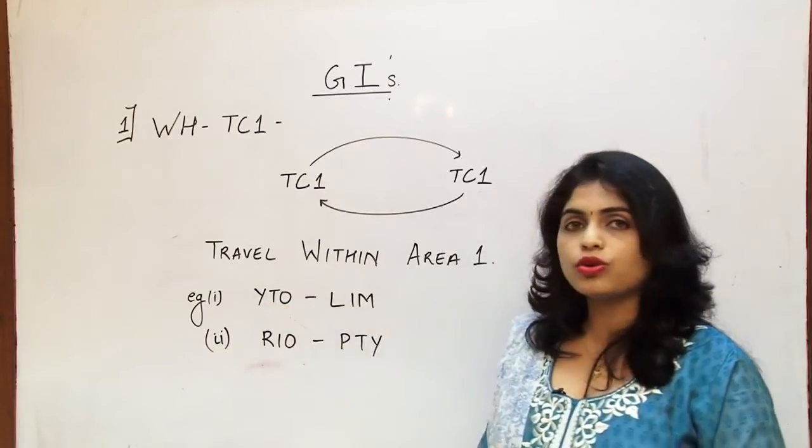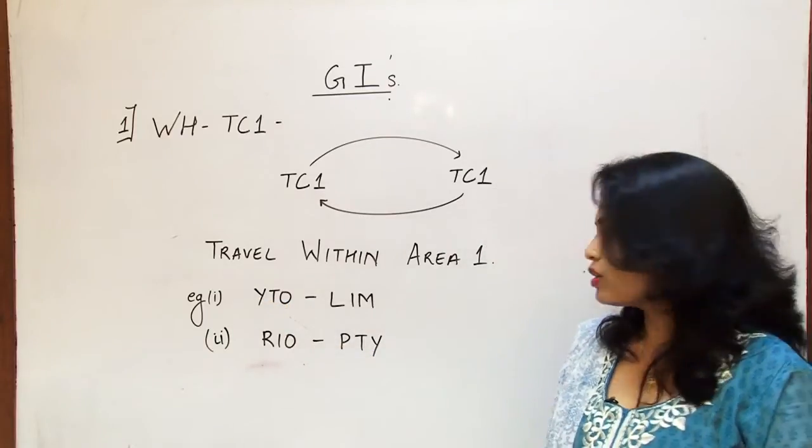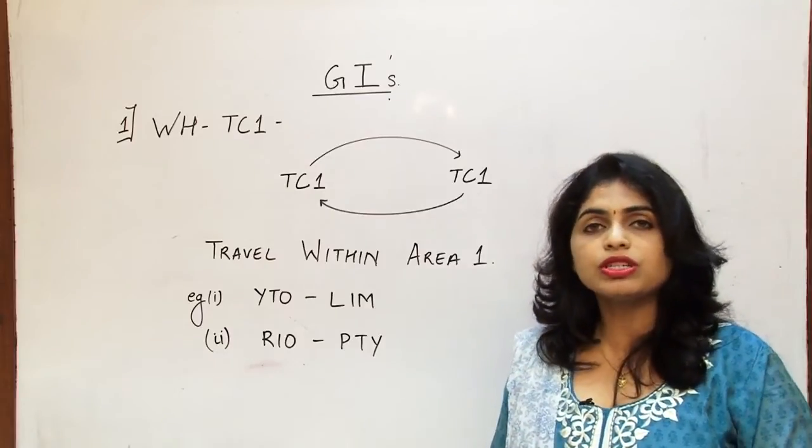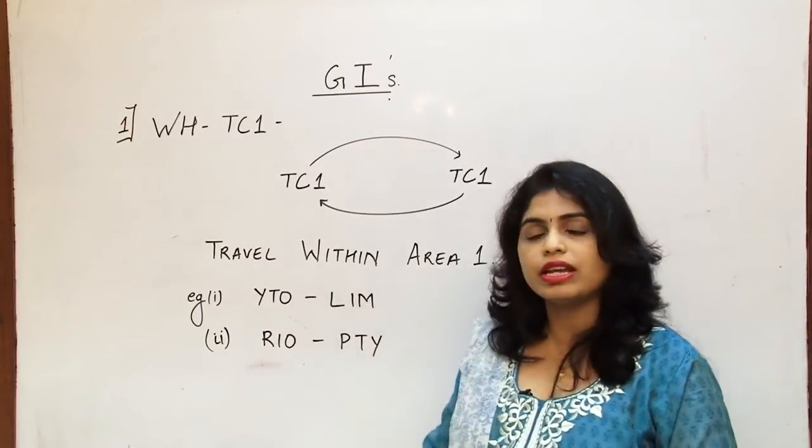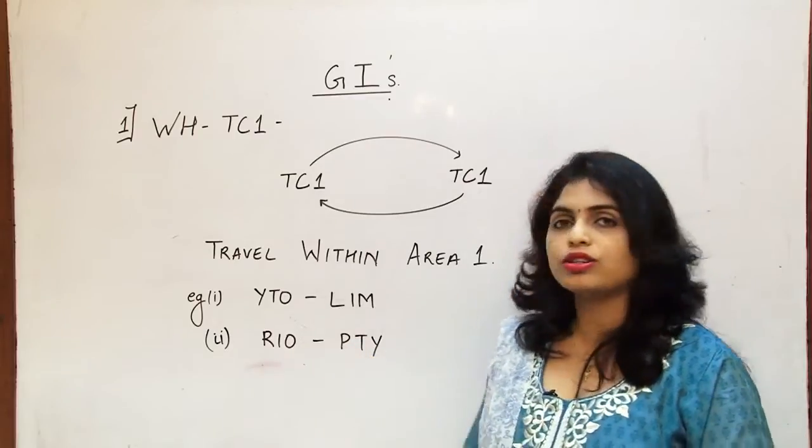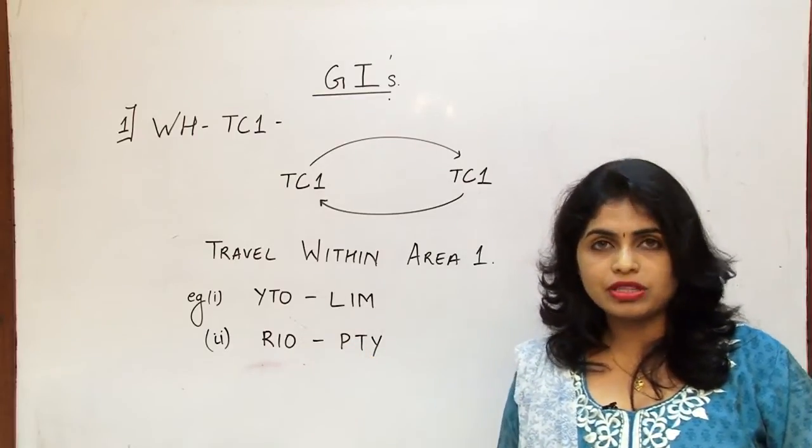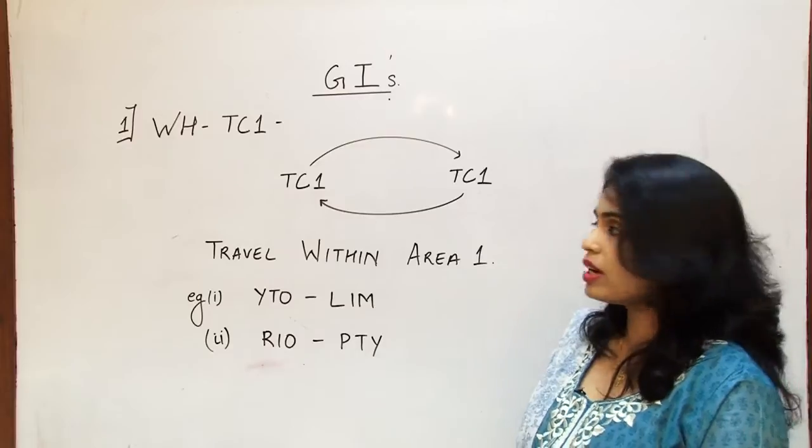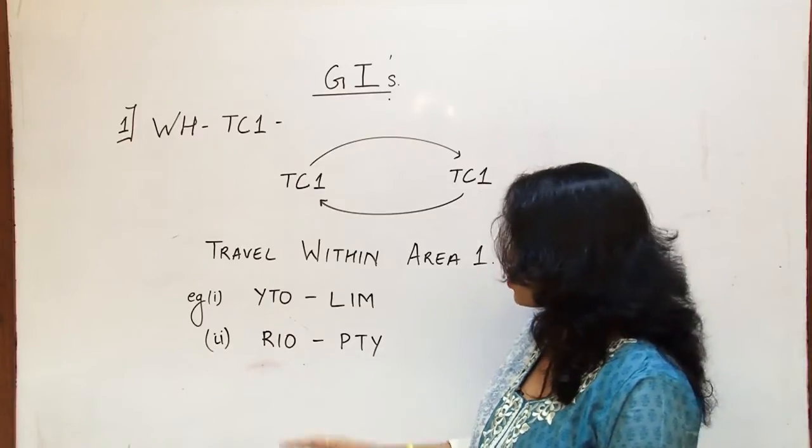So it is said to have the GI as WH. So here are some examples. Toronto, which is in Canada, which is in North America, and Lima, which is in Peru, which is in South America, both of them are in area one. So if I have a flight which is going from Toronto to Lima, it's considered to have Western Hemisphere or WH as a GI in the global indicator route.